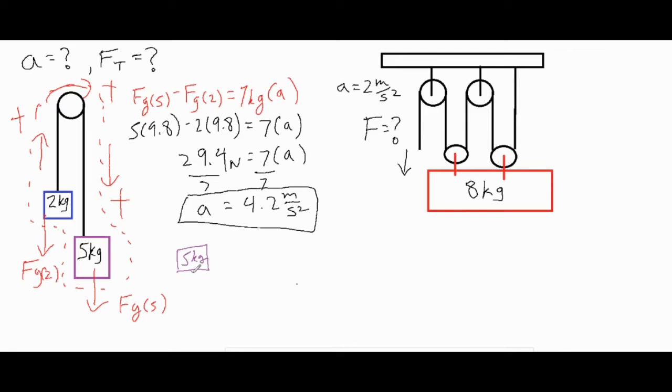If we just take a look at the five kilogram block, we have the FG and then we have the FT. Remember, FG is in the positive direction because it goes along this line right here which is downwards for the five kilogram object, so the FGs are positive. So we'll say FG is positive minus that FT and that equals the mass of five kilograms times the acceleration.